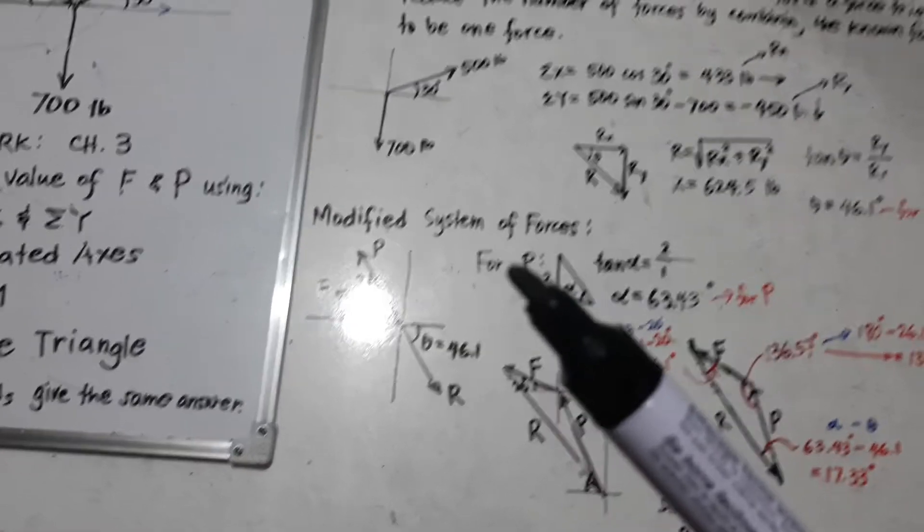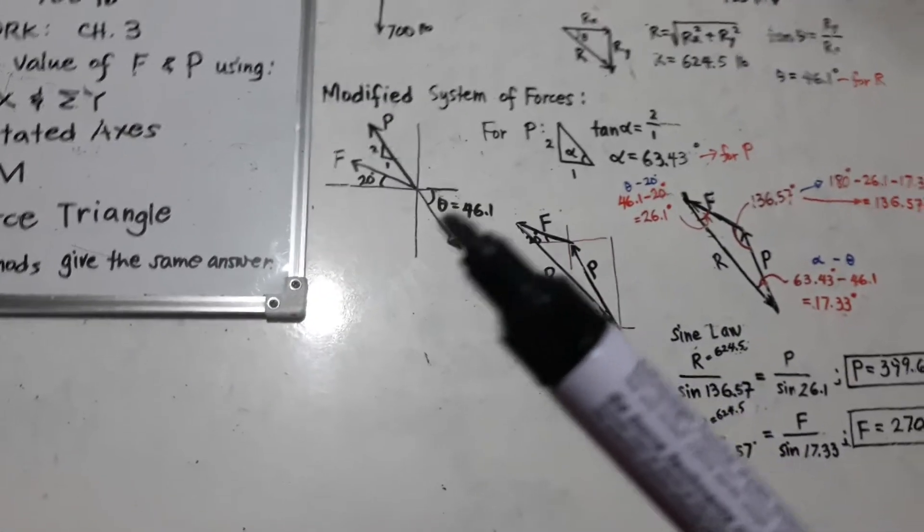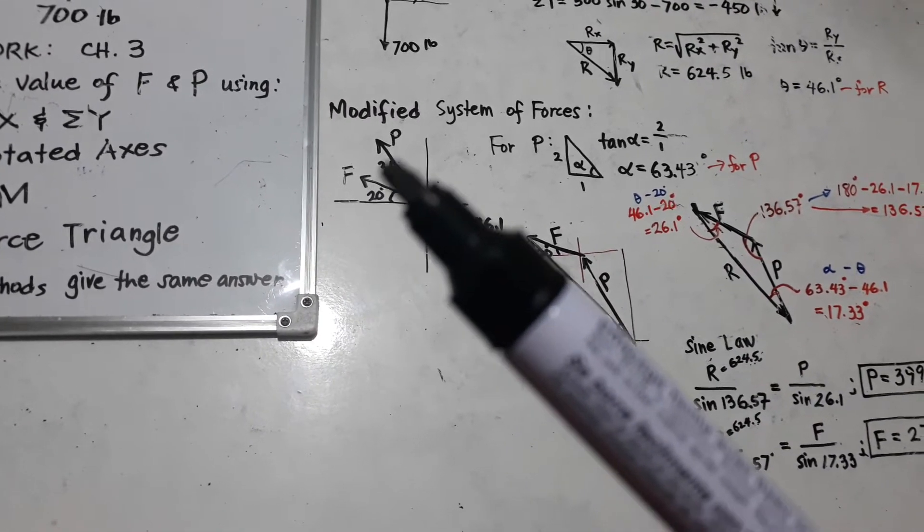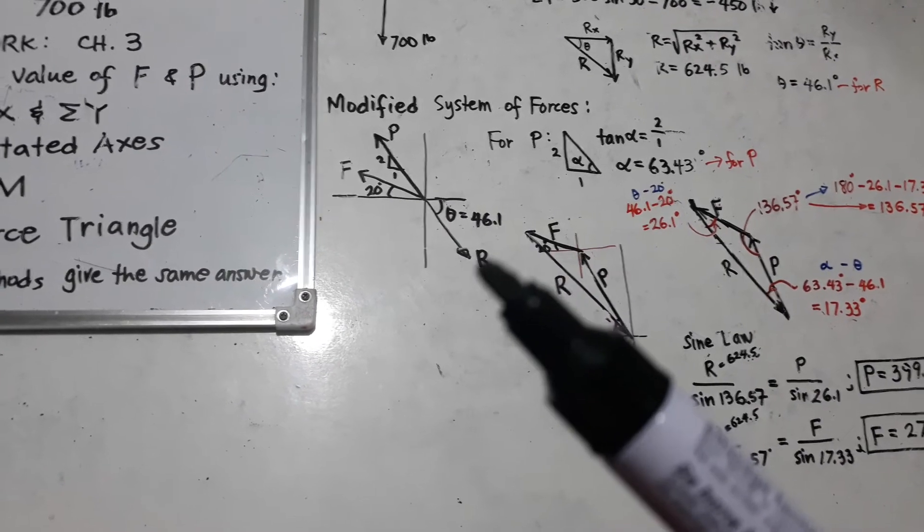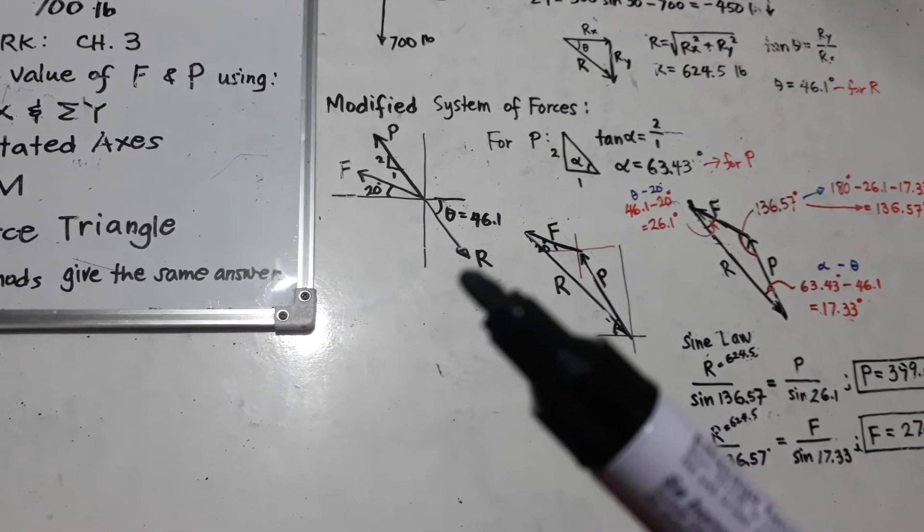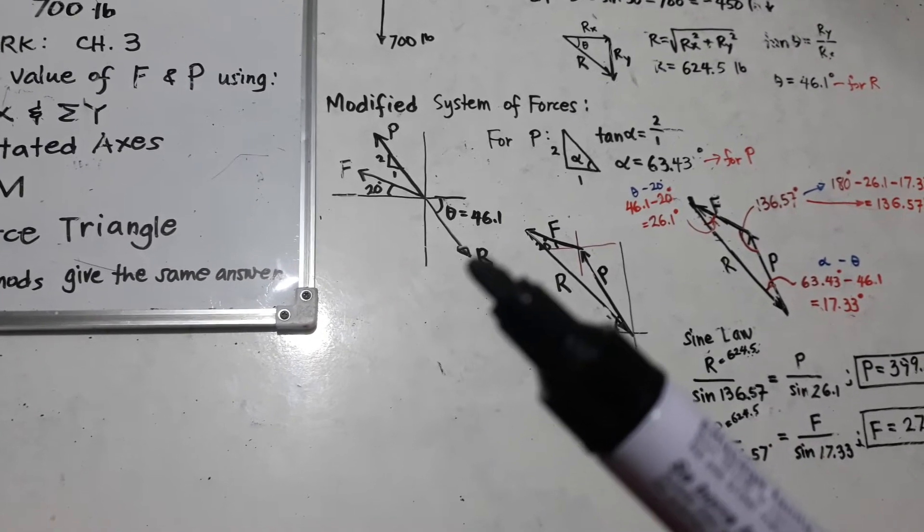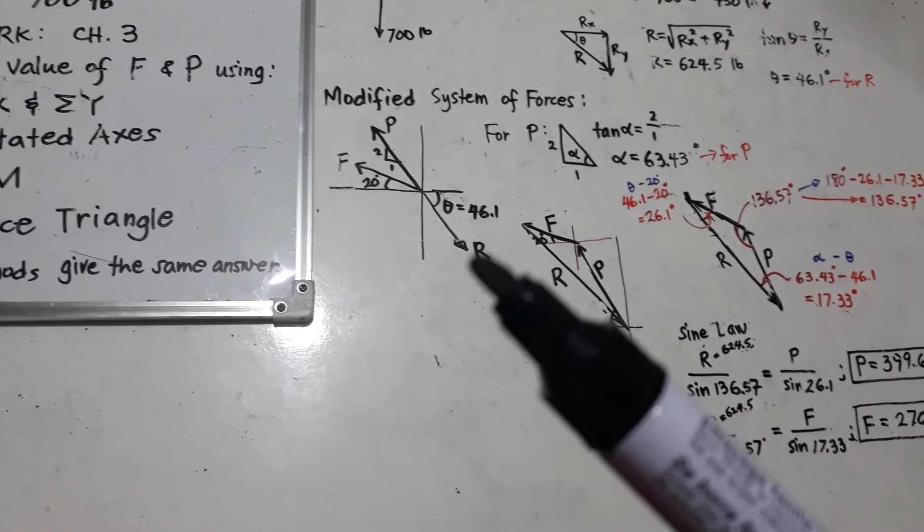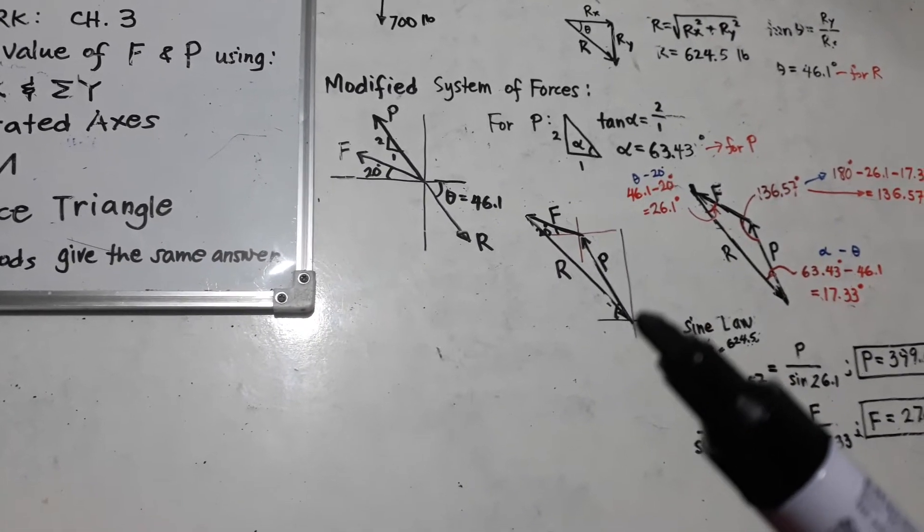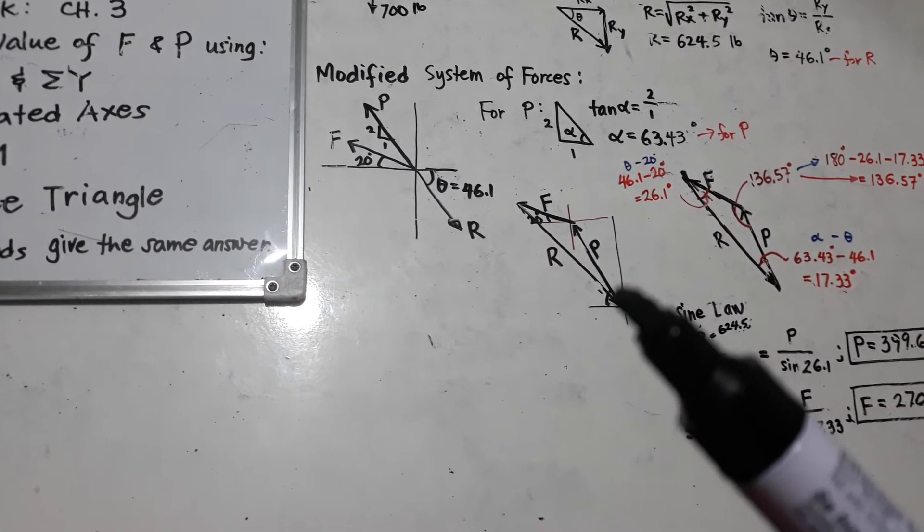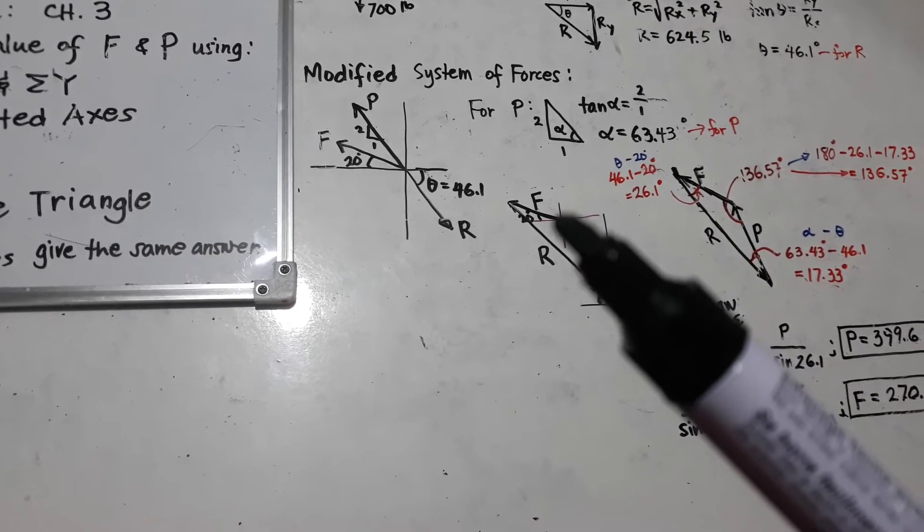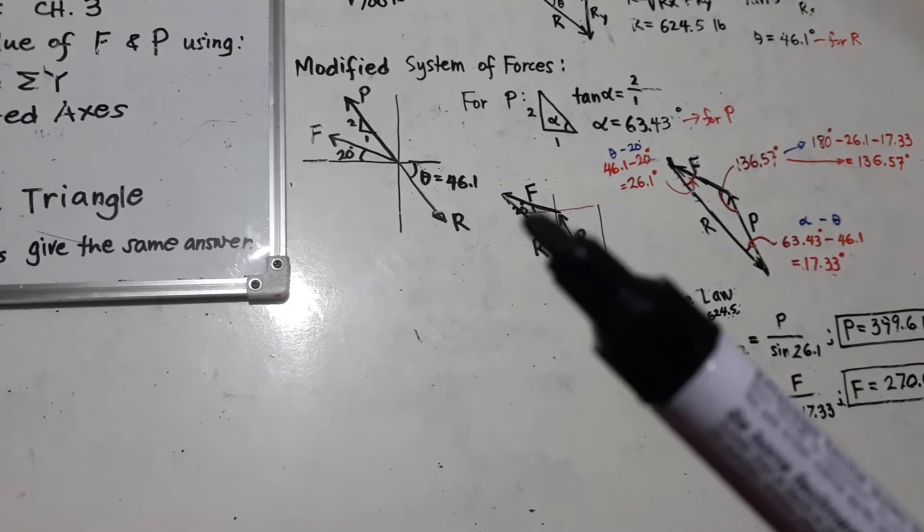So, we are going to make a modified system of forces. So, we have here still F and P, but R is already the remaining force as the combination of the two forces, 500 and 700. So, out of these three forces, we can form the force triangle. If I am going to start with P, force P, I will add force F and R is going here.